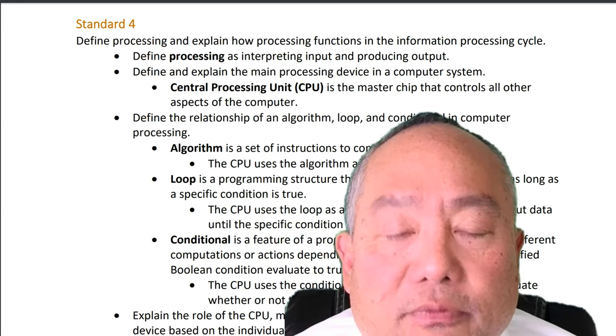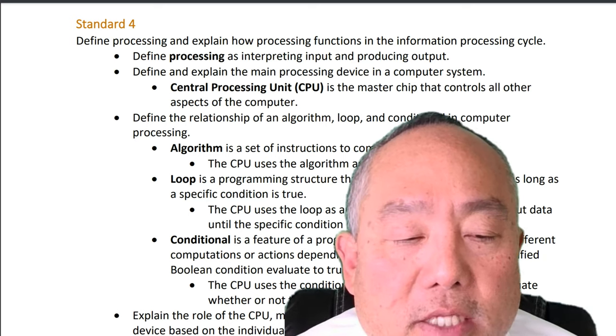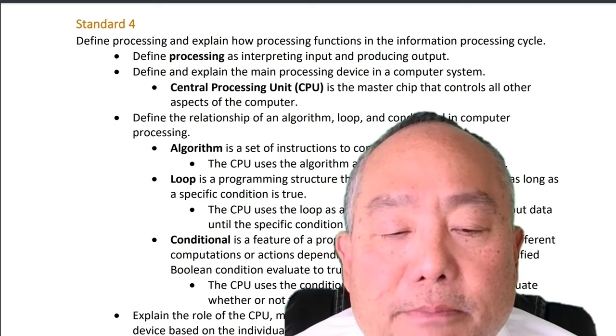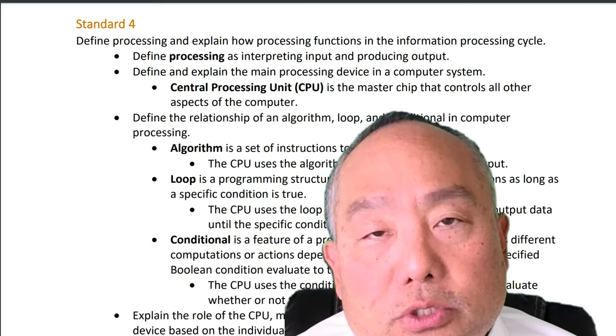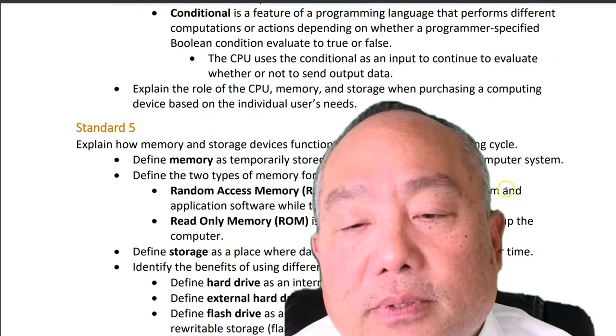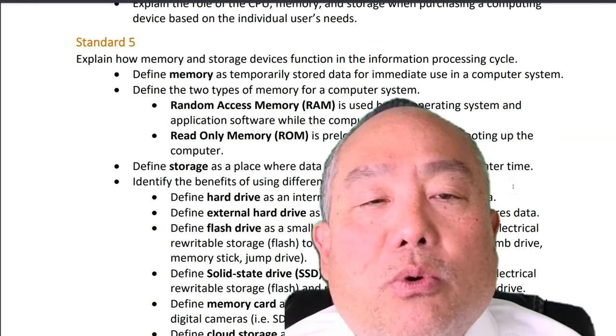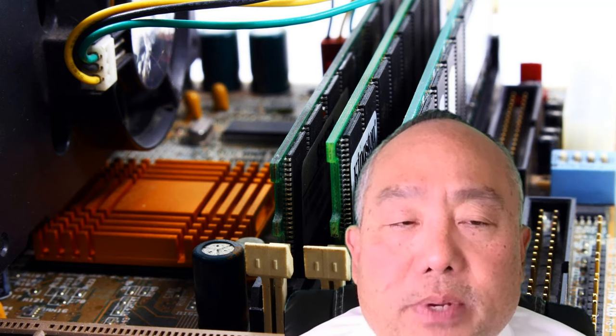Explain the role of the CPU, memory, and storage when purchasing a computer device based on the individual user's need. Standard 5: Explain how memory and storage devices function in the information processing cycle. Define memory as temporarily stored data for immediate use in a computer system. Define the two types of memory: random access memory or RAM, used by the operating system and application software while the computer is running; and read-only memory, which is preloaded instruction for booting up the computer.